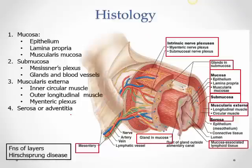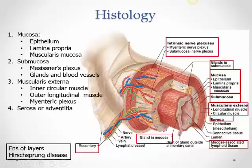Looking at the histology of the GI tract, there are four layers from inner to outer. The innermost layer is the mucosa, which has an epithelial lining. In the GI tract, if there is more friction — such as in the esophagus and anal canal — you have stratified epithelium. Where the epithelium is more secretory, you have columnar epithelium, and goblet cells may be present for lubrication or neutralization.